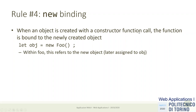Rule number four is the new binding. Whenever you call a function with the constructor syntax — calling a regular function with the new keyword in front — by convention we use a capital letter for functions meant to be called as constructors. In this case there's no object existing at the time of the call, but the new keyword creates a new empty object, and that new empty object is the context bound during this function call.